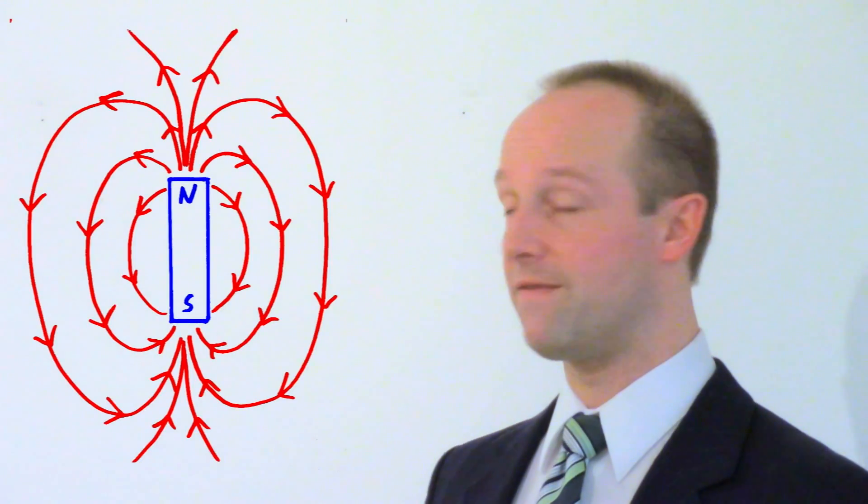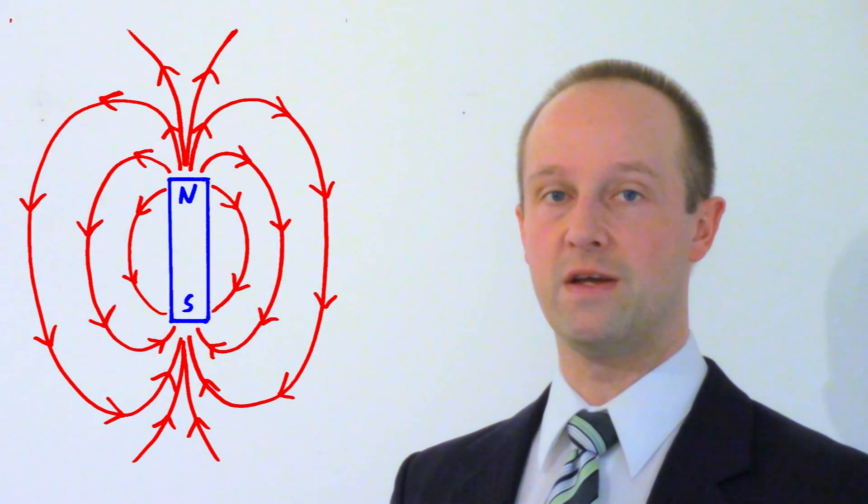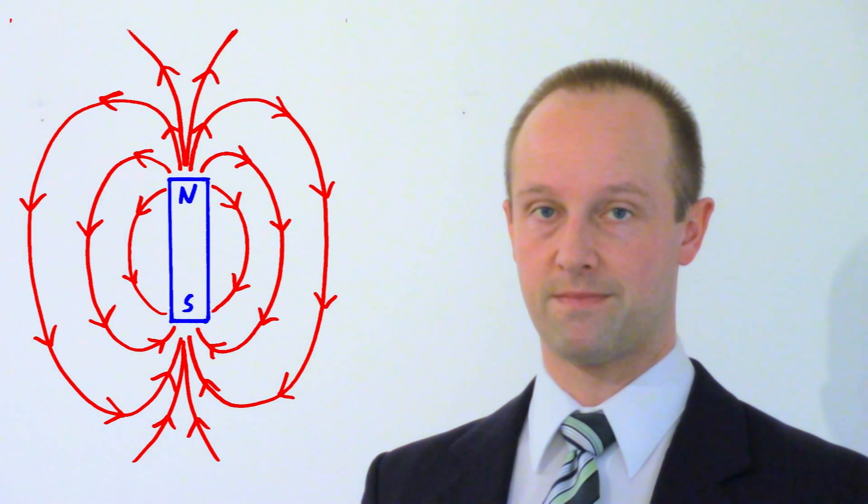Before we go any deeper into this here's a quick reminder of a few of the things you probably already saw in year seven or year eight. Firstly magnets have a magnetic field around them and we represent that field with field lines. Also a couple of terms which you need to be aware of.